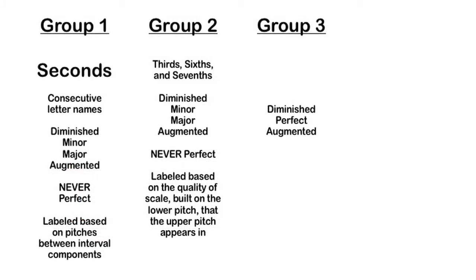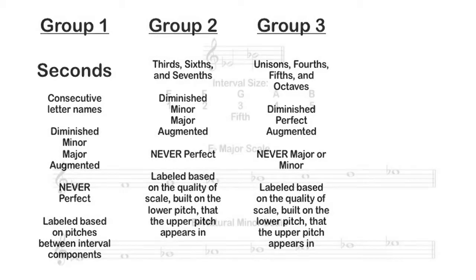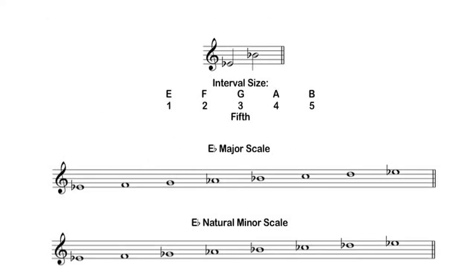Group 3 intervals are intervals that can be labeled perfect, meaning they cannot be labeled major or minor. Group 3 intervals include unisons, fourths, fifths, and octaves. In order to be a perfect interval, the higher pitch must be in both the major and natural minor scale built on the lower pitch. For example, E flat to B flat: the size is a fifth, and B flat shows up in both the major and natural minor scale built on E flat — so this would be a perfect fifth.